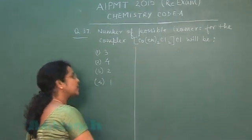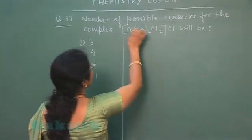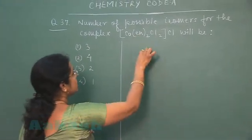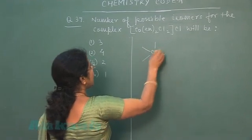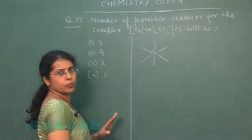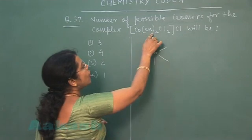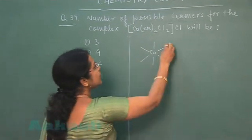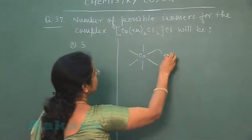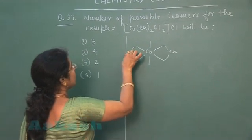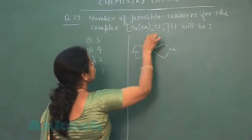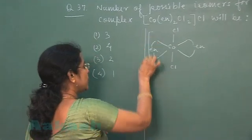Let us find the number of isomers. Formula suggests that this complex is an octahedral complex in which two of the ligands are ethylenediamine. This is ethylenediamine, ethylenediamine, and these two chlorides.